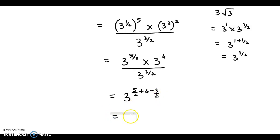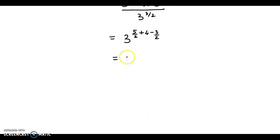So proceeding further, what we get here is 3 raised to, now let us simplify it over here, 5 by 2 minus 3 by 2 plus 4.